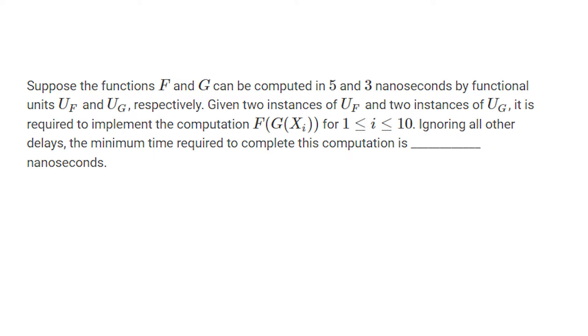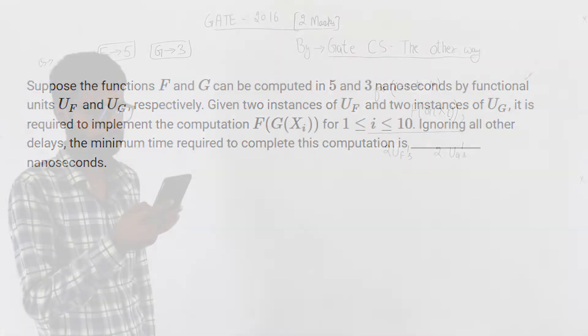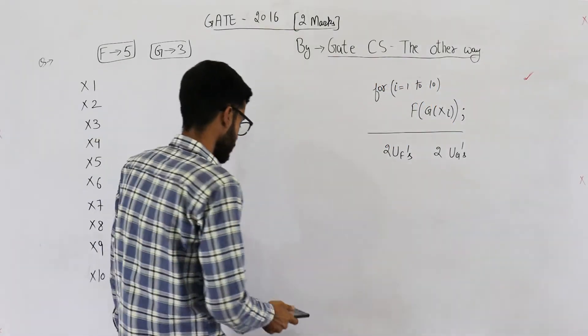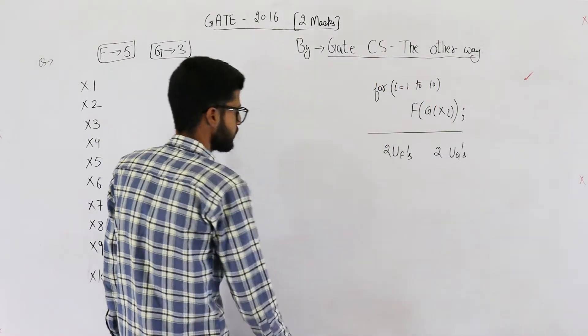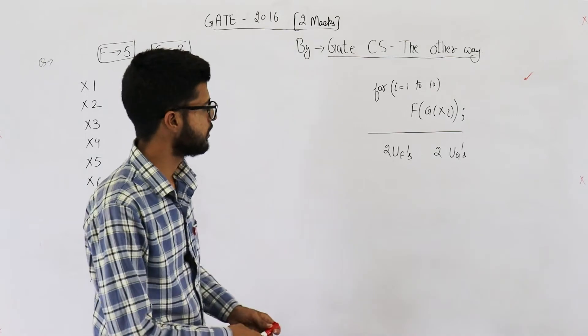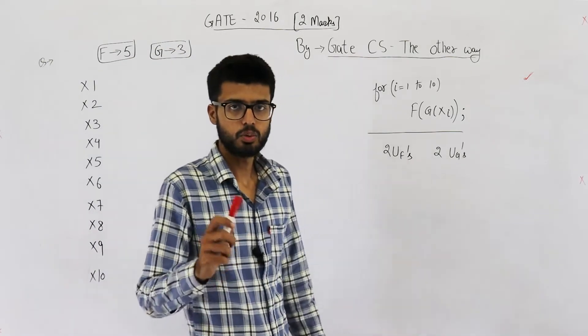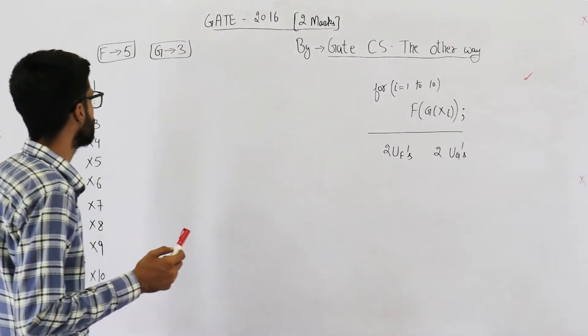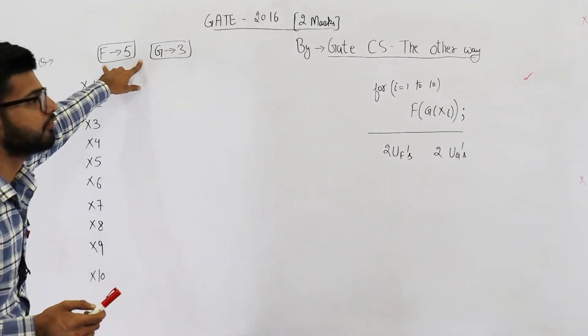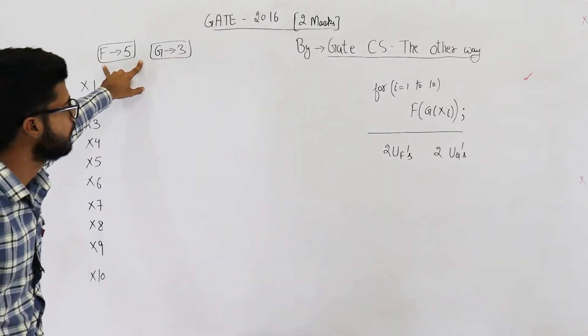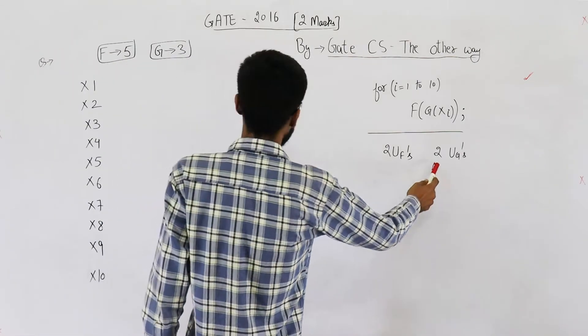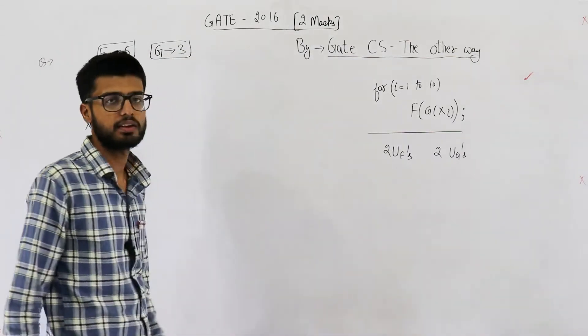Ignoring all the delays, the minimum time required to complete this computation is dash nanoseconds. So they're saying in some processor, you have these two units Uf and Ug.